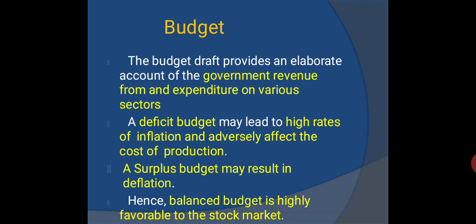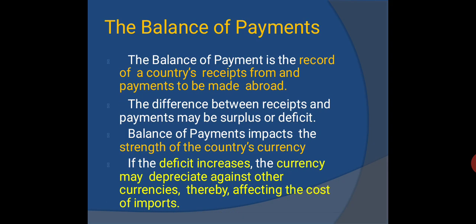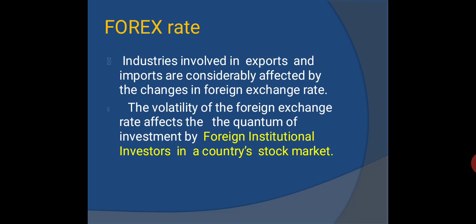The budget provides an elaborate account of government revenue and expenditure. A deficit budget may lead to high inflation and adversely affect the cost of production, while a surplus budget may result in deflation; hence a balanced budget is highly favorable to the stock market. The balance of payments is the record of a country's receipts from and payments abroad. A deficit increases may cause the currency to depreciate, affecting the cost of imports and forex rates. Industries involved in exports and imports are considerably affected by changes in foreign exchange rates, which also impact investment by foreign institutional investors.